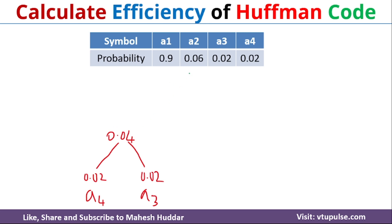Between these three — that is 0.04, 0.06, and 0.9 — 0.04 is the minimum and the next minimum is 0.06. So I will consider 0.06 on the right side, because between these two, 0.04 is smaller and 0.06 is the larger number. That is nothing but A2. I will merge these two things and we will get 0.1 as the new probability. We have considered A2, A3, A4. This new probability is 0.1, and A1 is the remaining symbol with probability 0.9.